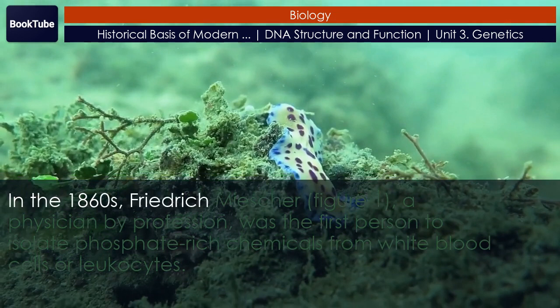Hershey and Chase labeled one batch of phage with radioactive sulfur (35S) to label the protein coat. Another batch of phage were labeled with radioactive phosphorus (32P), because phosphorus is found in DNA but not protein. Therefore, the DNA and not the protein would be tagged with radioactive phosphorus.